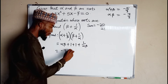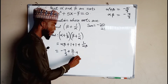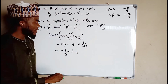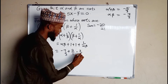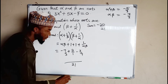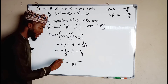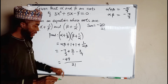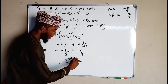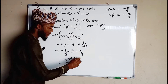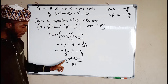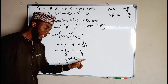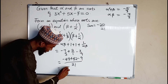1 plus 1 is 2, so we have negative 7 over 3 plus 2 plus 1 over alpha beta. Now 1 over (negative 7/3) is the reciprocal, which gives negative 3 over 7. The LCM is 21: 3 into 21 is 7, seven times negative 7 is negative 49; 1 into 21 is 21, twenty-one times 2 is 42; 7 into 21 is 3, three times negative 3 is negative 9. So we have negative 49 plus 42 plus negative 9, which gives negative 49 plus 42 equals negative 7, then negative 7 minus 9 equals negative 16 over 21.